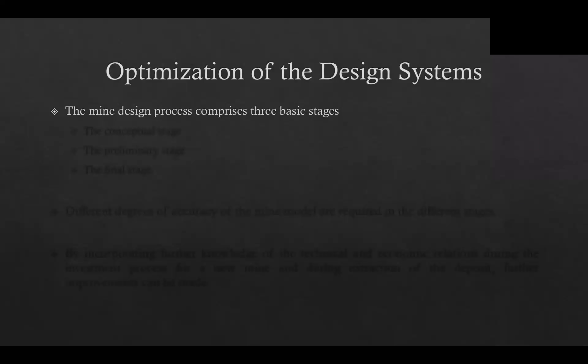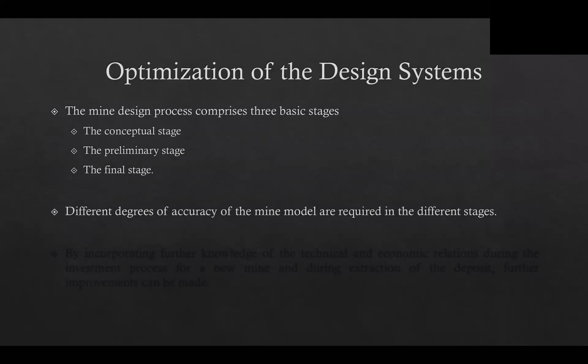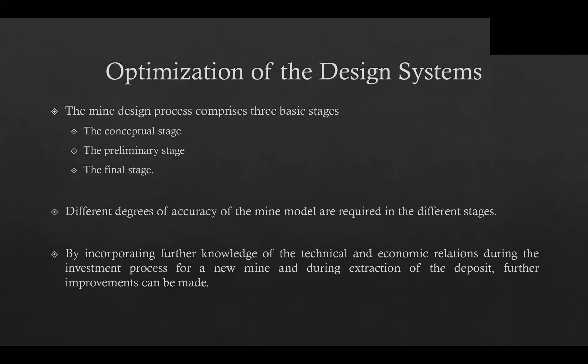The mine design process comprises three basic stages: the conceptual stage, the preliminary stage, and the final stage. Optimization is imposed in each stage of the design, but the number of problems to be optimized varies. For this reason, different degrees of accuracy of the system model are required at different stages. The best results can be achieved by using the most accurate model of the investment project as a whole, not by only looking at the subsystems. By incorporating further knowledge of the technical and economic relations during the investment process for a new mine, as well as during the extraction of the deposit, further improvements can be made in the design.